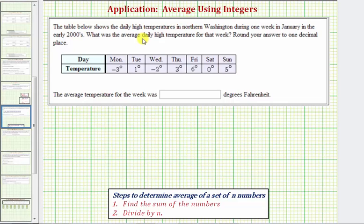The table below shows the daily high temperatures in northern Washington during one week in January in the early 2000s. What was the average daily high temperature for that week? And we're asked to round to one decimal place.